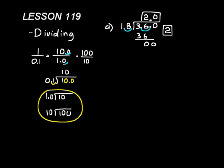Don't forget, when you have a divisor that's a decimal number, move the decimal over until you make it a whole number. Move it over the same amount in the dividend as well.